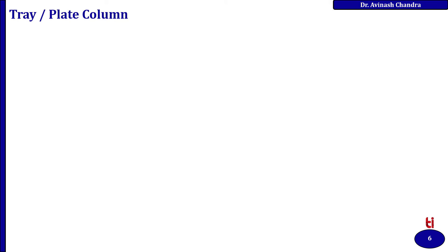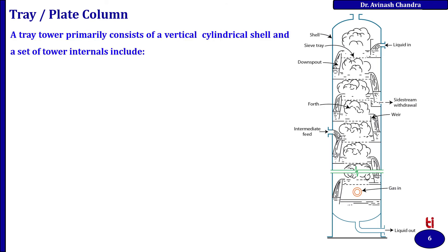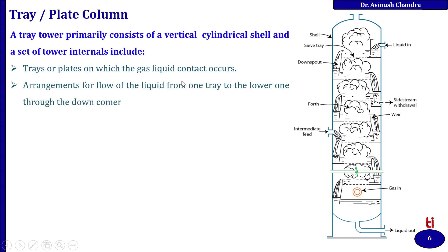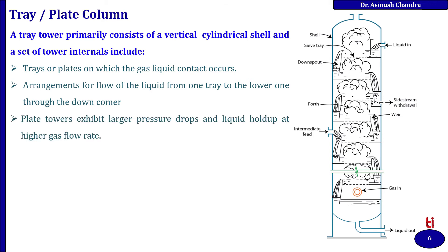Starting with the tray or plate column: in this figure, the outer shell is shown with the sieve tray. The liquid enters the system; the downcomer directs liquid from one tray to the next lower one. There is a side stream withdrawal, a weir, and a force. An intermediate feed is provided, with gas entering from the bottom and liquid exiting, and gas leaving from the top. Plate towers exhibit larger pressure drop and liquid holdup at higher gas flow rates, and plate columns are normal for fouling or solids-laden service.